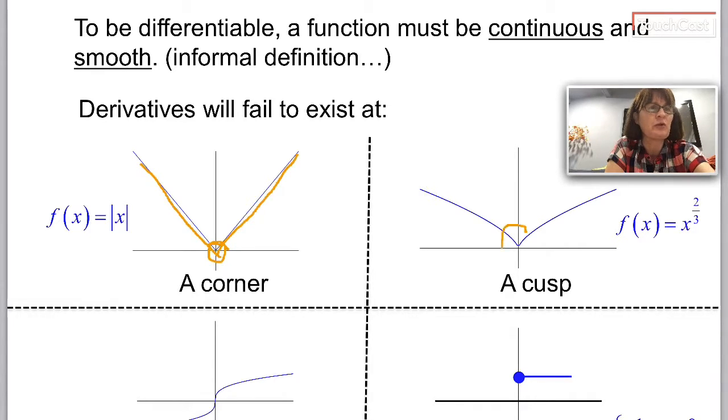A cusp is just sort of a fancy corner. It comes from one of these kinds of functions where you take a variable and raise it to a fraction exponent where the numerator is even and the denominator is odd.